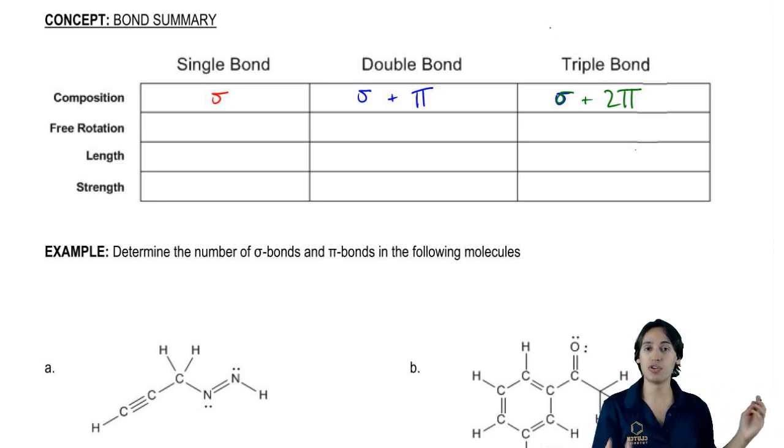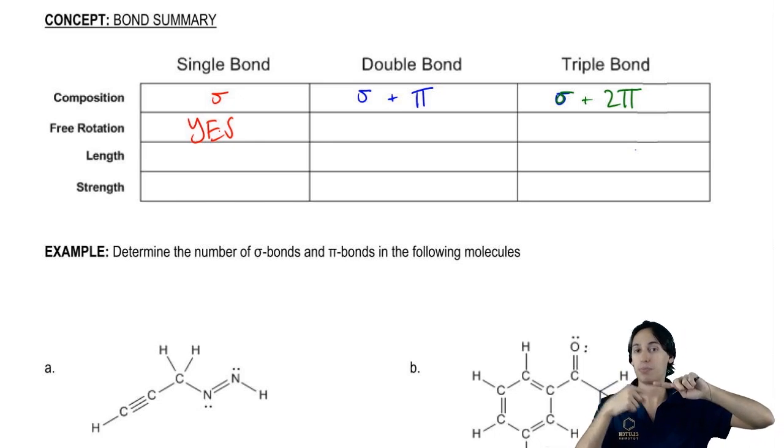So it turns out that for a single bond, since they only have one region of overlap, we're just going to write a big yes right here. Yes, I have free rotation because I can rotate one of the atoms as much as I want. It's always going to have that bond present.